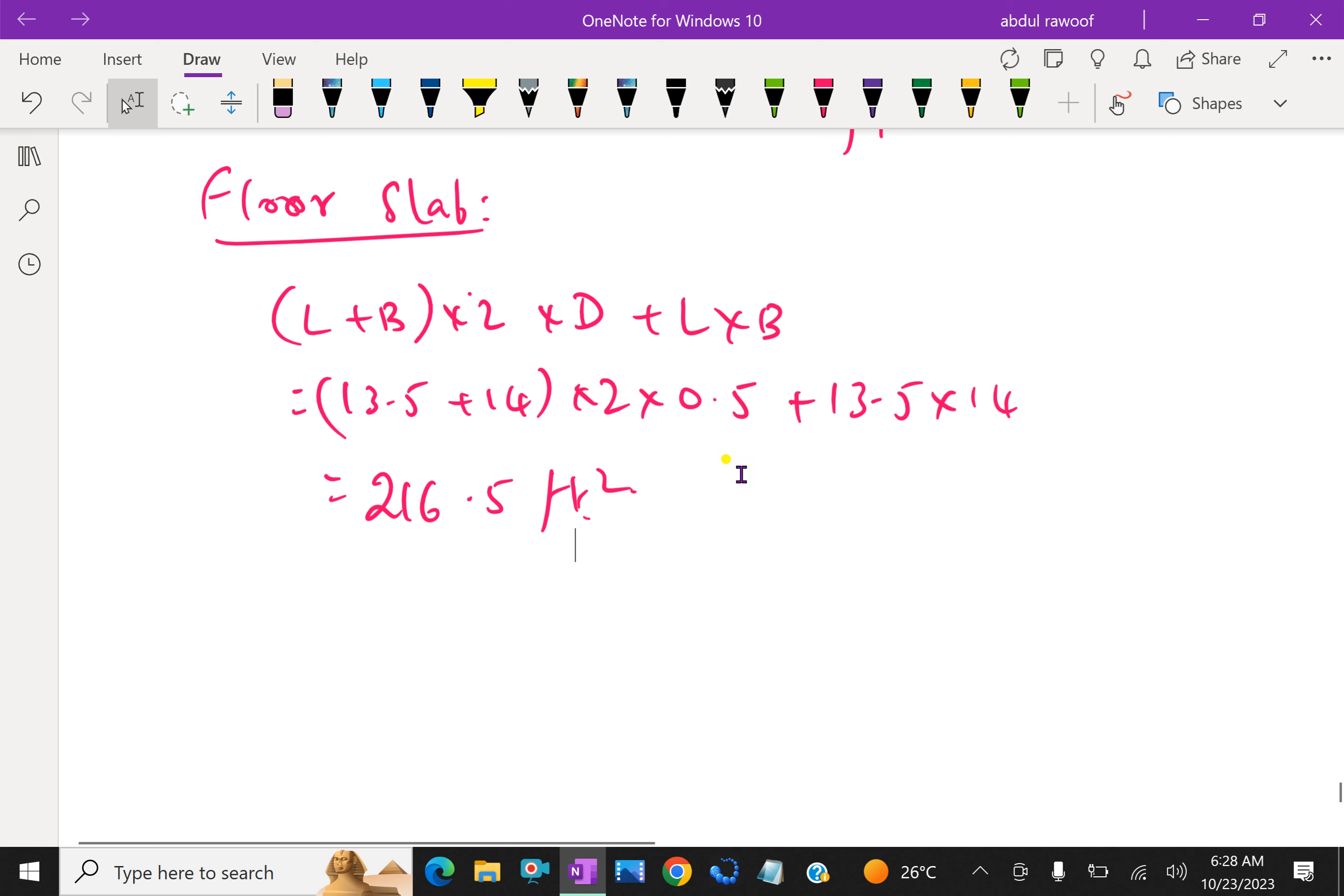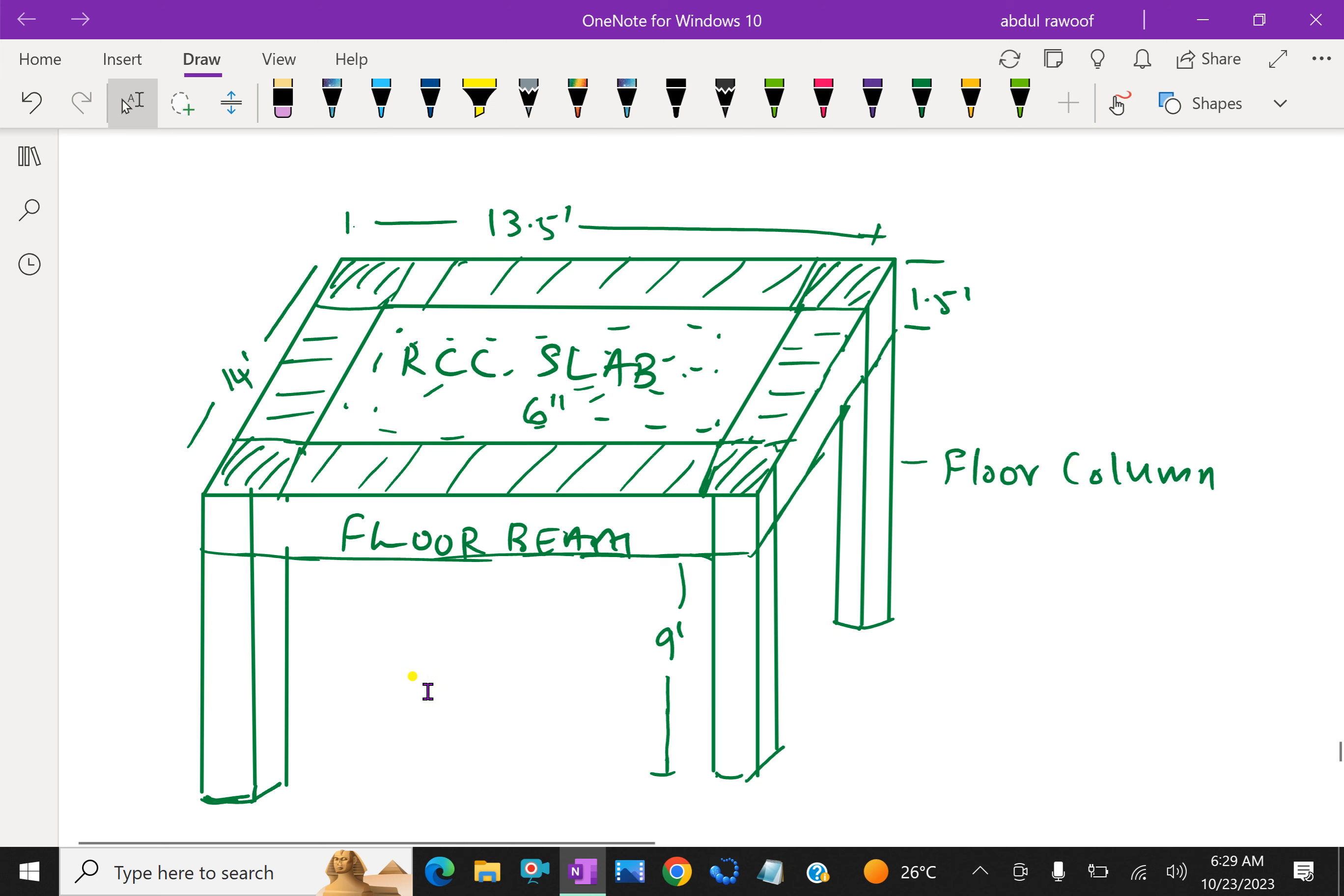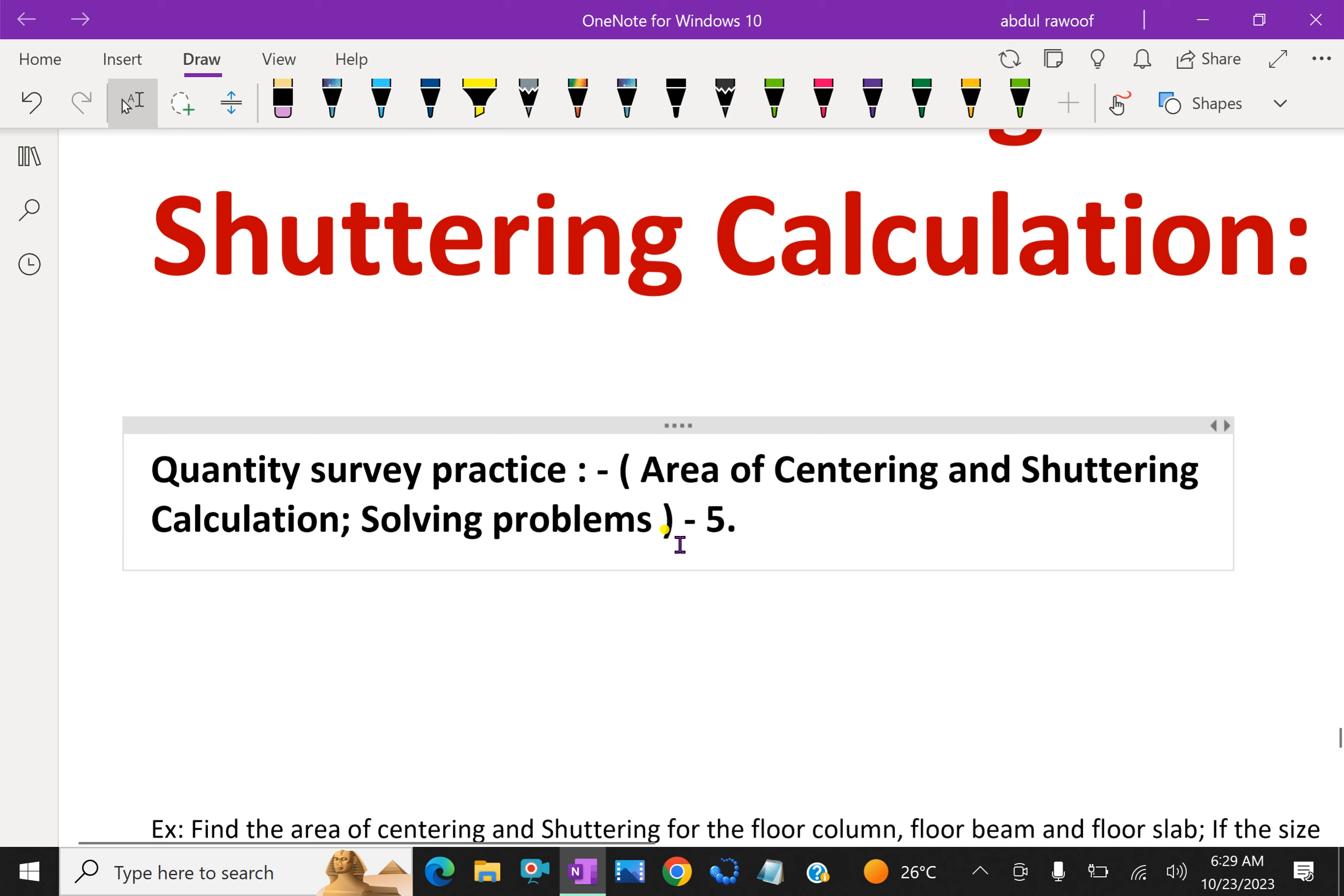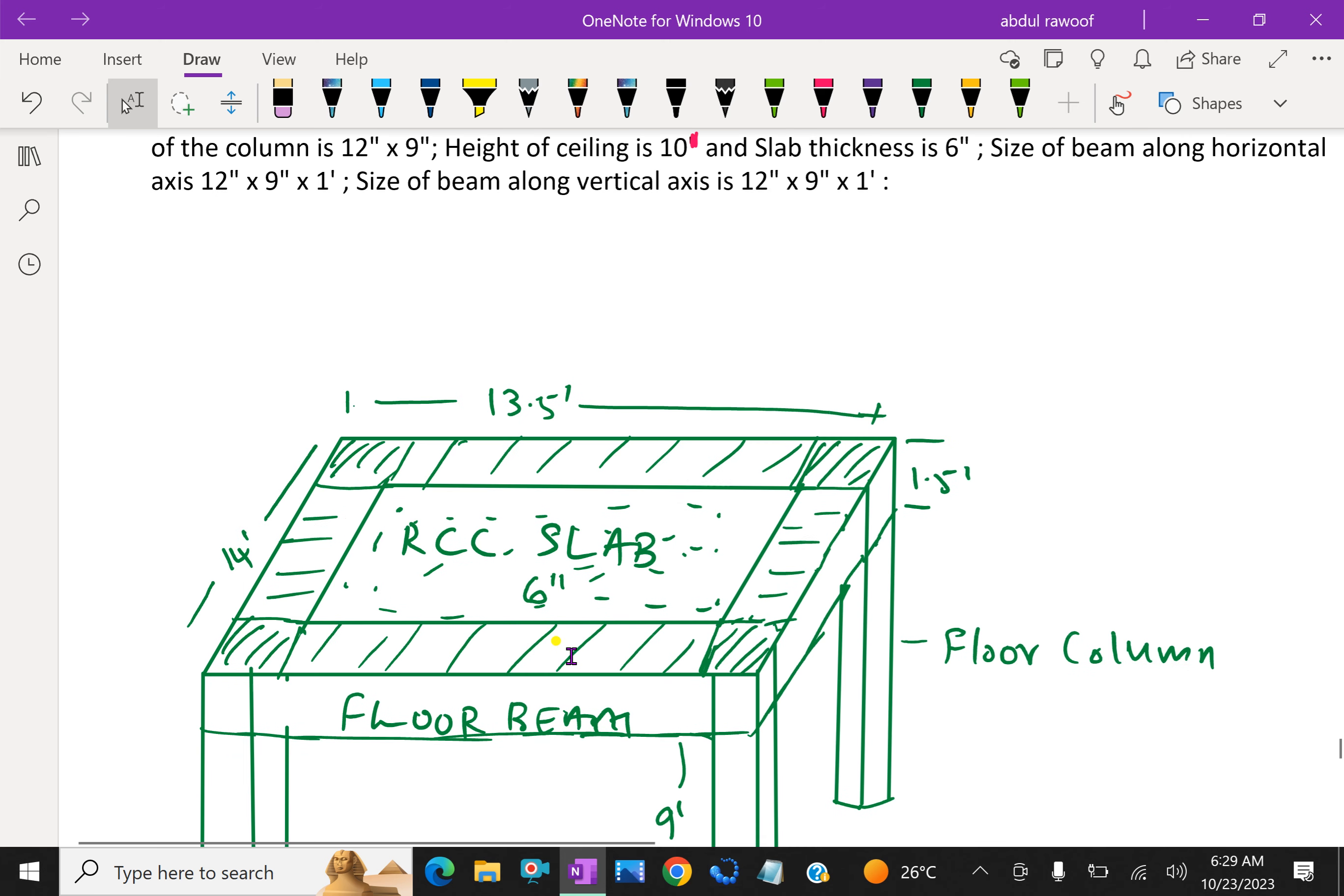These are the areas for centering and shuttering for the given structure. So far we discussed about area of centering and shuttering calculation for structural parts of the building. It is a 4 column with simple calculation with 4 beams. If you have enjoyed, please subscribe to our YouTube channel.